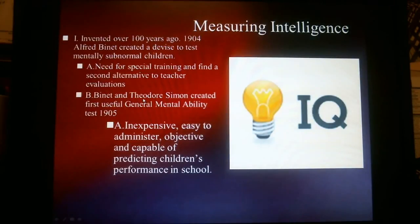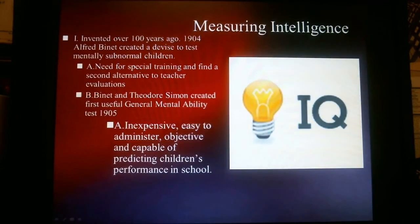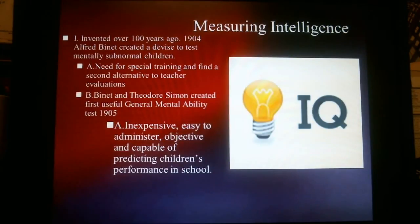Binet, along with Theodore Simon, his aide, created this test. They called it the General Mental Abilities Test, created in 1905. It wasn't expensive, and it did its job — it helped school districts objectively assign kids to where they needed to be placed based on their intelligence level.